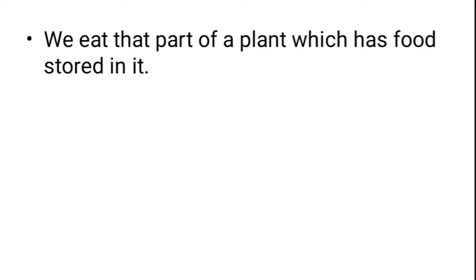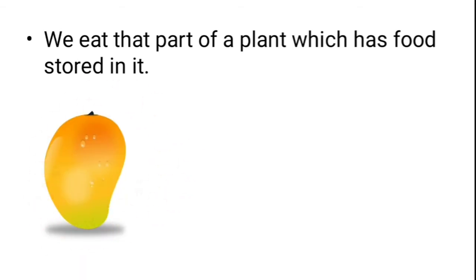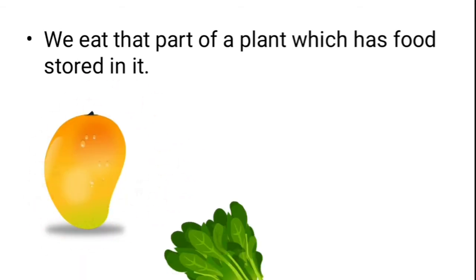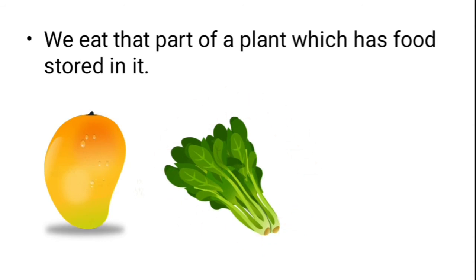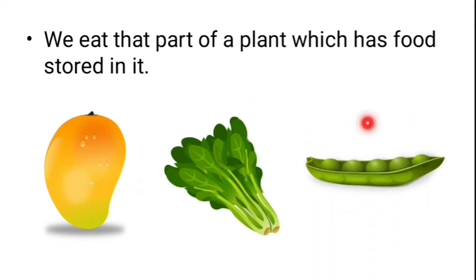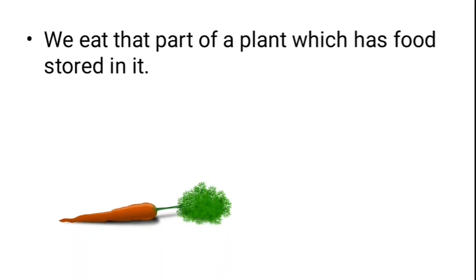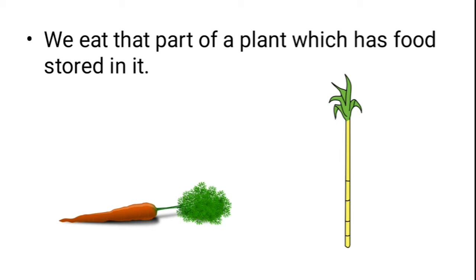We eat that part of the plant which has food stored in it. For example: mango, spinach, green peas, carrot, and sugarcane — we consume all these plants and their parts because there is food stored in them.